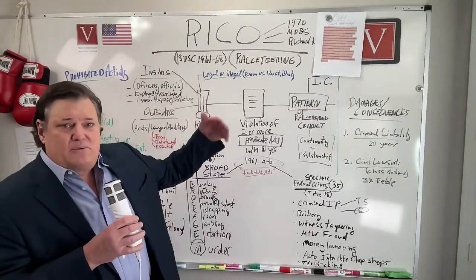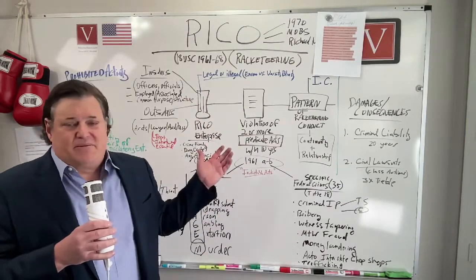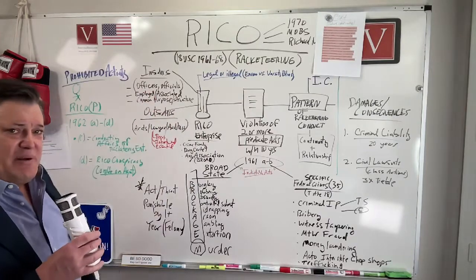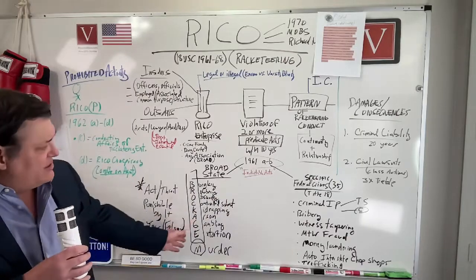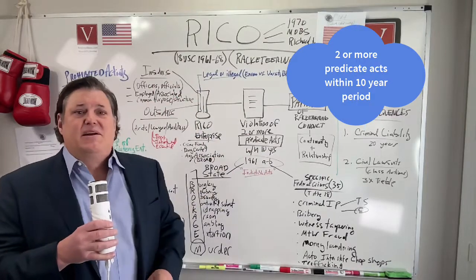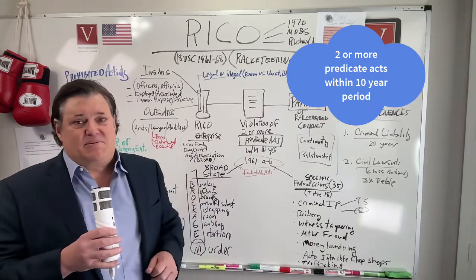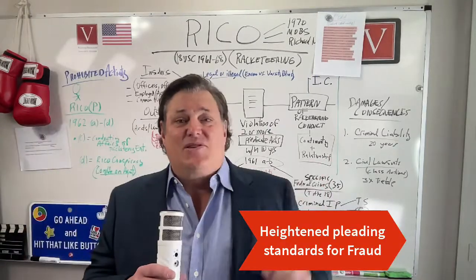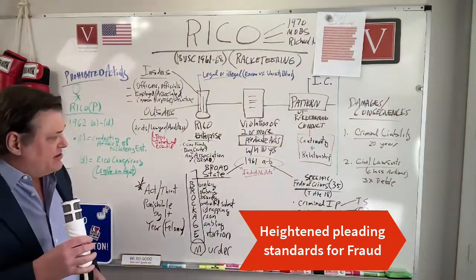Violation of two or more predicate acts — it could be two of these, could be one of these, a combination of two or more, could be 50 or 100 different acts. Pleading is really important in these cases. You want to plead everything you know with specificity, especially if you're dealing with fraudulent-type conduct. Fraud usually needs to be pled to a higher standard — clear and convincing, very specific factual allegations. So pleading is definitely an art form here.